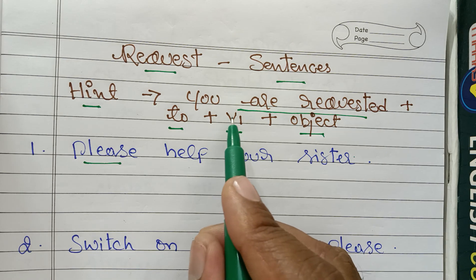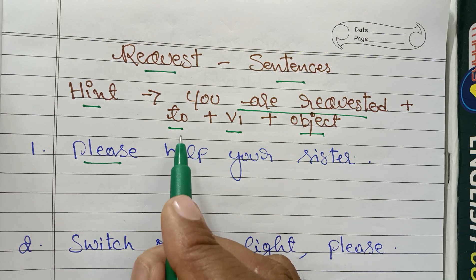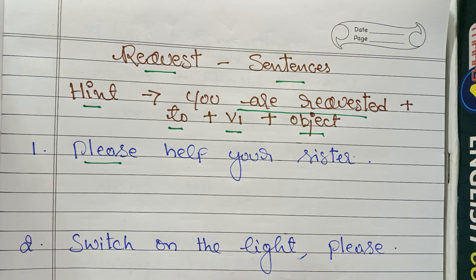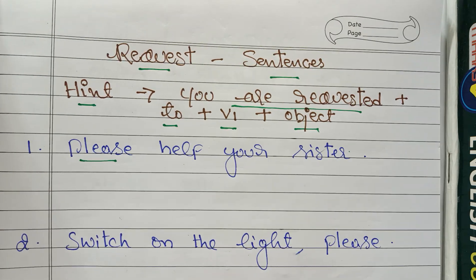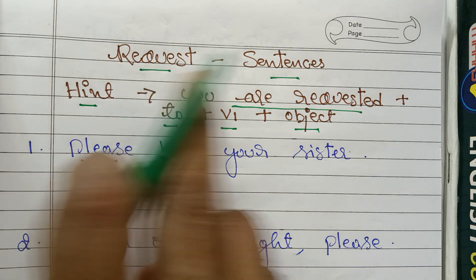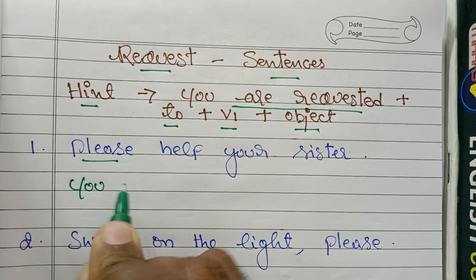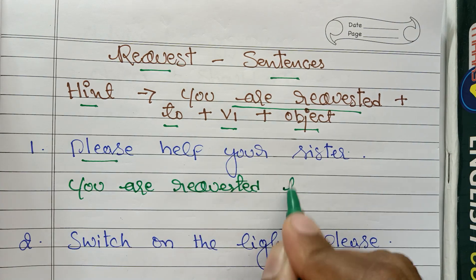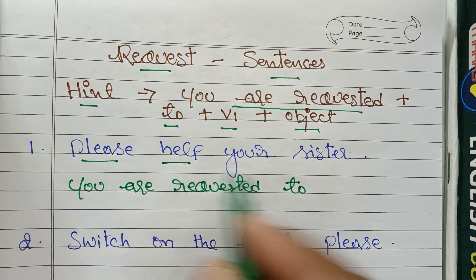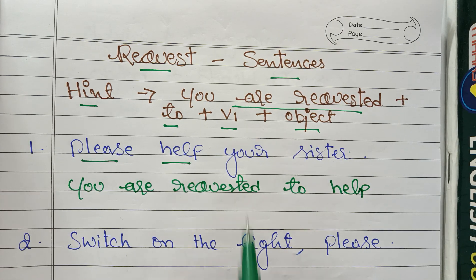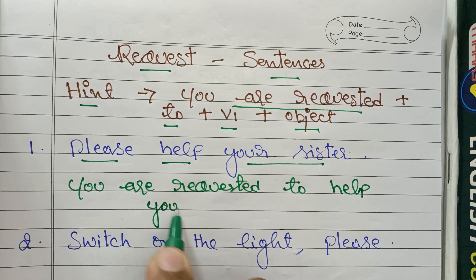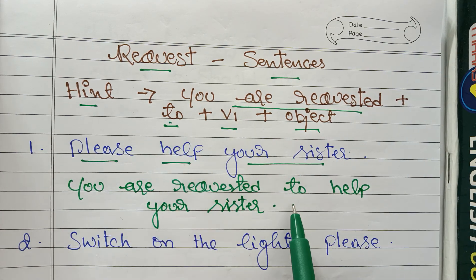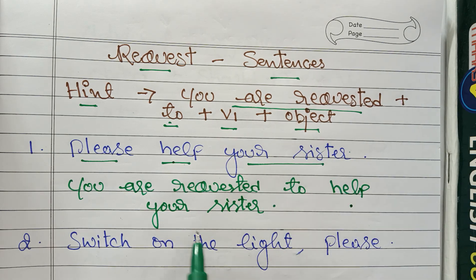Remember this hint: start the sentence with 'You are requested + to + V1' — like to play, to sing, to dance — plus the object. First identify the object. Example: 'Please help your sister.' This is a request sentence. So: 'You are requested to help your sister.' That's all.